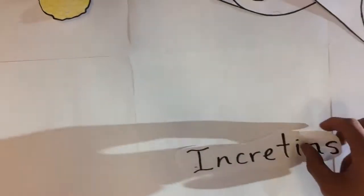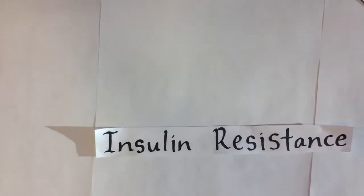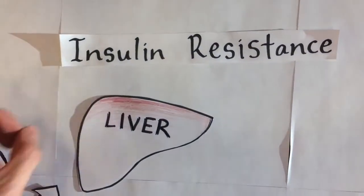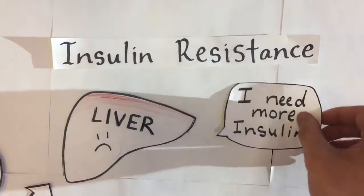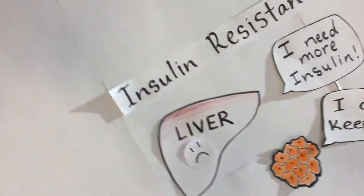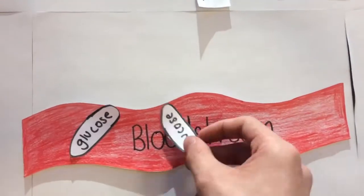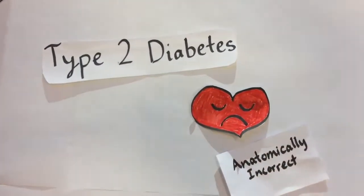Insulin production is stimulated by hormones known as incretins, such as glucagon-like peptide 1, also known as GLP-1. Insulin resistance causes a poor response from the liver, which means the liver needs more insulin in order to function. With the failure of the beta cells to keep up with the insulin demand, glucose builds up in the bloodstream, and this causes diabetes as well as other health problems.